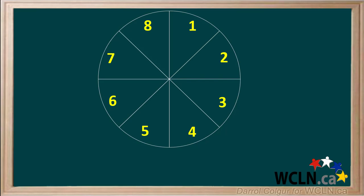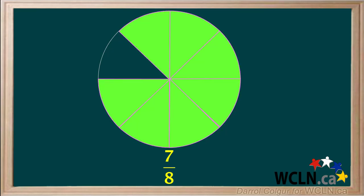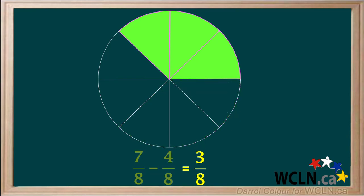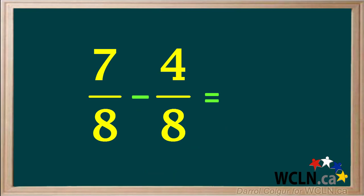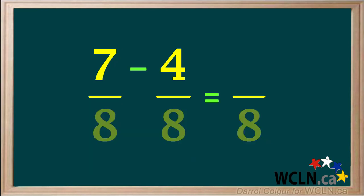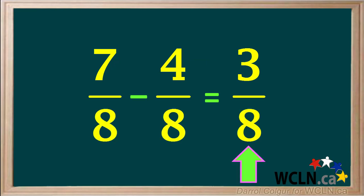Here's a circle divided into eighths. We've colored in 7 of the eighths, so this represents the fraction 7 eighths. Now we'll subtract 4 eighths. And we see that we're now left with 3 eighths. So here we're subtracting one fraction from another, and they have a common denominator of 8. We see the denominator in our answer is just the same, or 8. And to find the numerator of our answer, we just subtract the numerators: 7 minus 4 is equal to 3. So the final answer is 7 eighths minus 4 eighths is equal to 3 eighths.